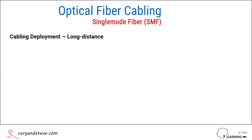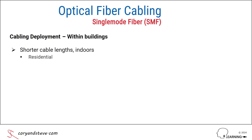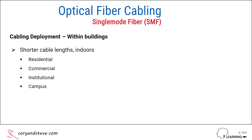The second type of SMF cabling deployment is within buildings, where relatively short cable segments — typically less than one kilometer in length — are used to link network devices in places such as homes, office buildings, hospitals, university campuses, and data centers.